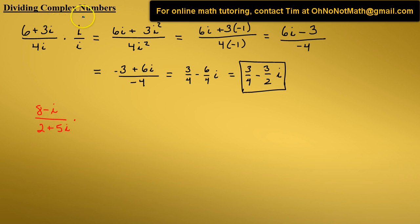Our goals with dividing complex numbers are to remove the imaginary numbers from the denominator and then simplify. So to get rid of this imaginary number, we multiply the numerator and the denominator by the conjugate of the denominator. The conjugate of 2 plus 5i is 2 minus 5i.